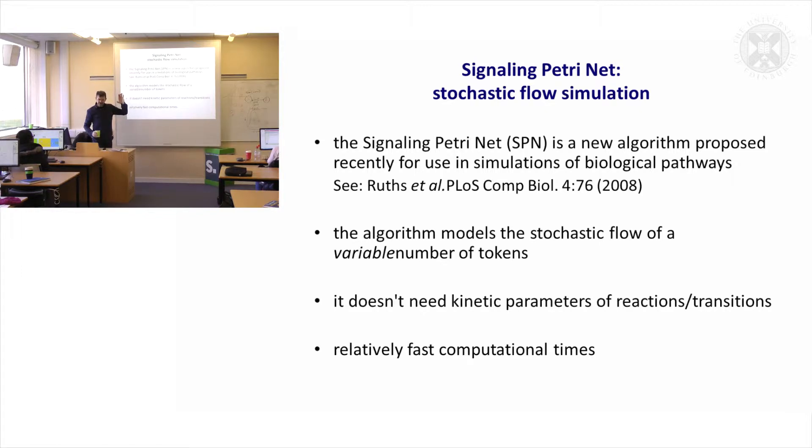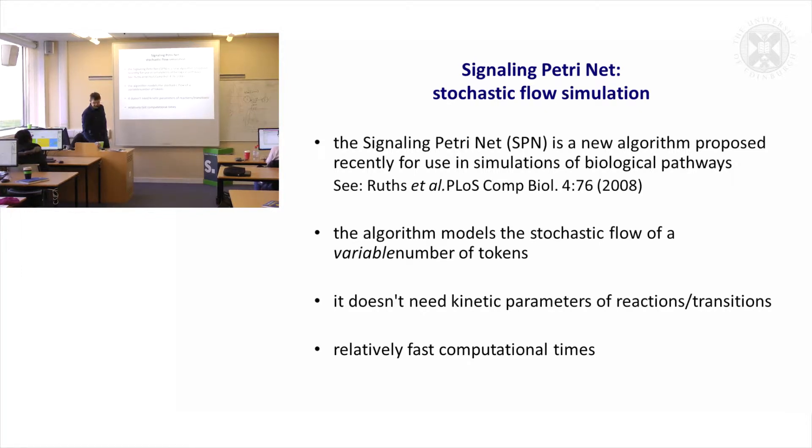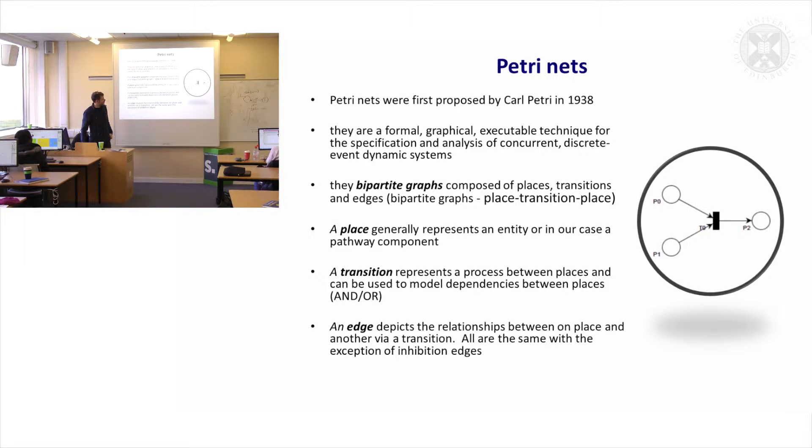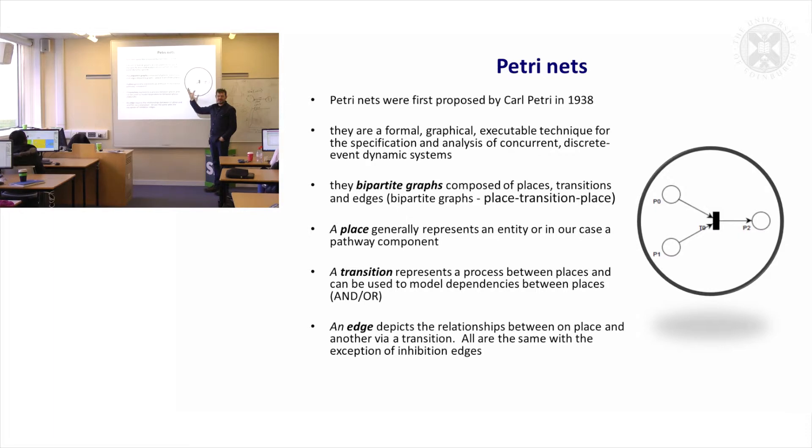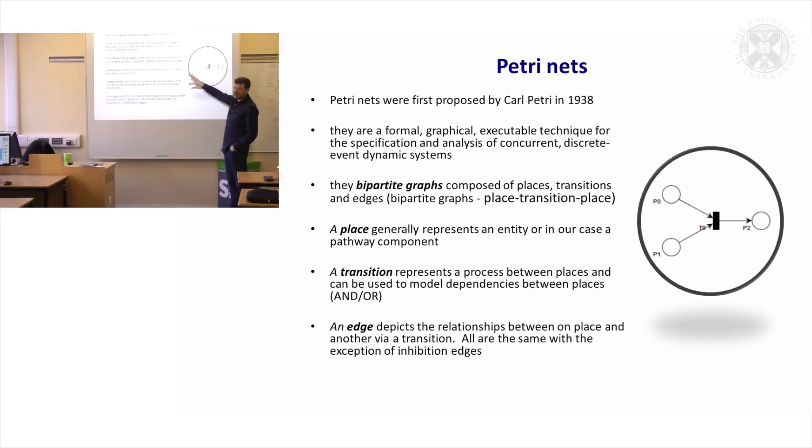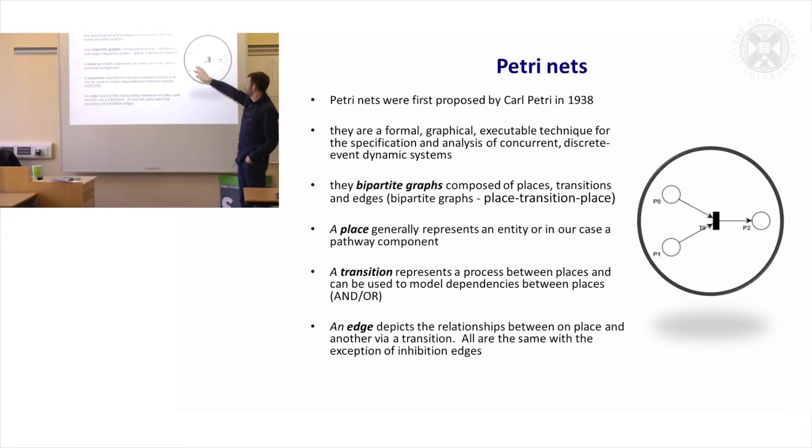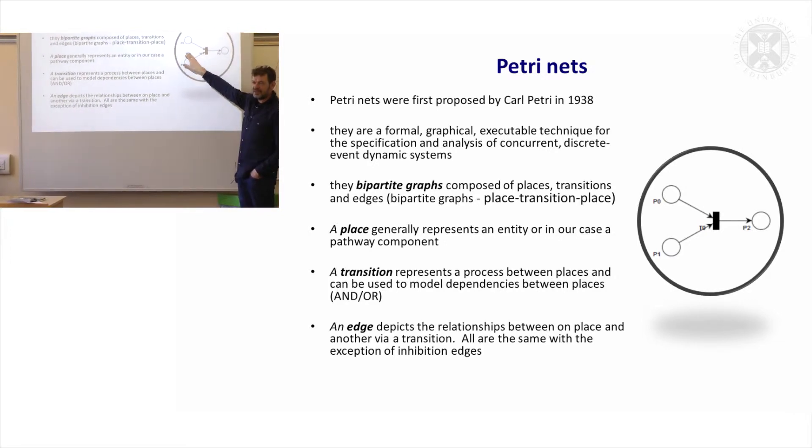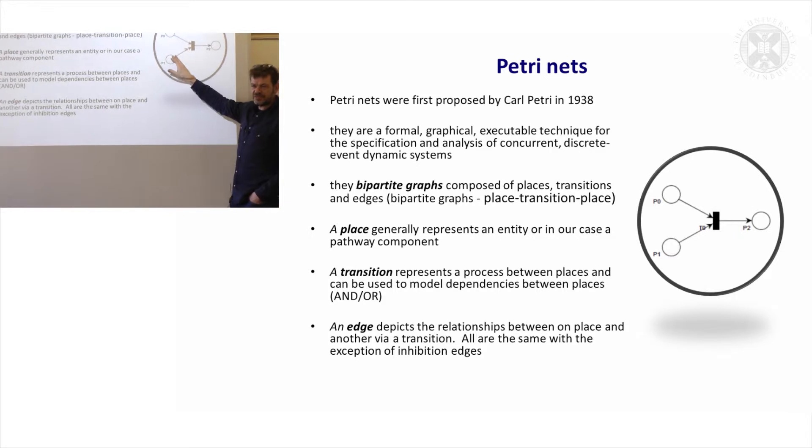Basically it models the flow of tokens. In all of these Petri nets here, what you're assuming is—so a token, think of a token as the amount, or representing the amount or activity of a given entity. If this has tokens, it exists. The more tokens that you have on this place, the more of it there is in reality. So a token is just a way of representing that. And what we're going to do in Petri nets is we're going to move tokens from one place to another based around the topology of the graph itself.